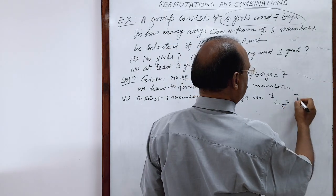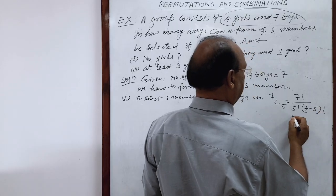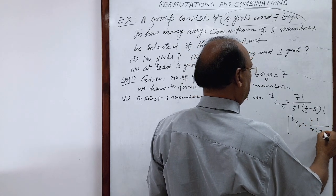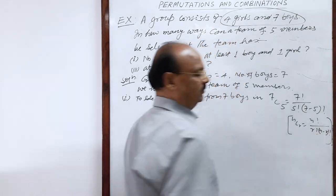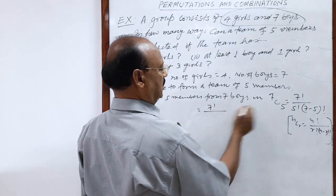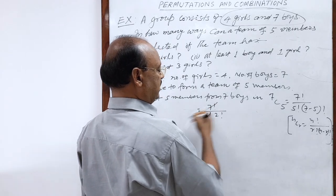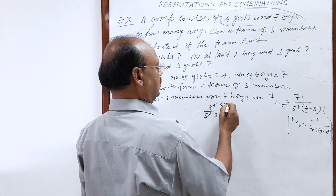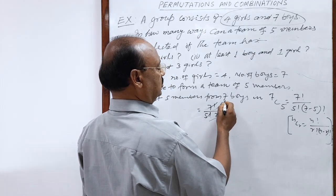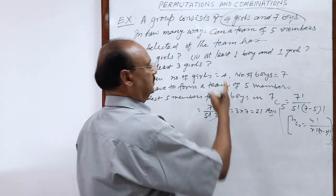Seven C five equals seven factorial by five factorial into two factorial. Using the formula NCR = n factorial by r factorial into (n minus r) factorial. This five factorial cancels with seven factorial, giving six into seven. Two factorial is two, which cancels with six, giving three into seven, which equals twenty-one. This is the answer of the first part.